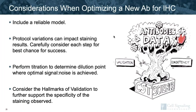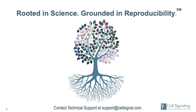To summarize some considerations when optimizing a new antibody for IHC: be sure to include a reliable model to start. Protocol variations can impact staining results, so carefully consider each step for the best chance for success. Perform a titration to determine the dilution point where optimal signal-to-noise is achieved. And consider the hallmarks of validation to further support the specificity of the staining observed. Thank you so much for your attention — please note we are always happy to connect and provide support.